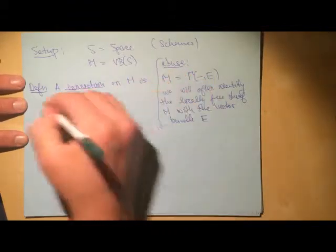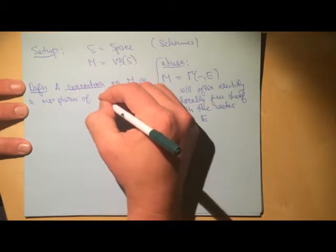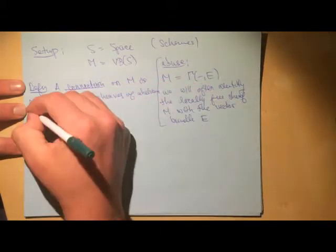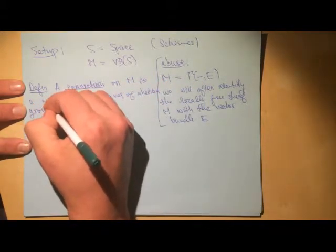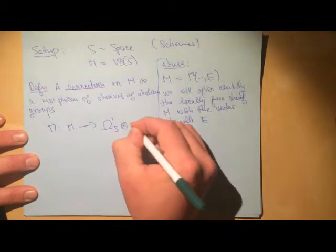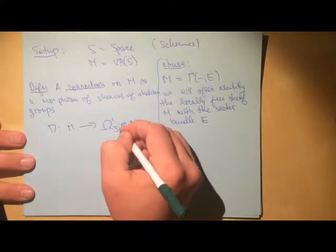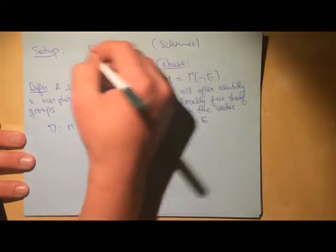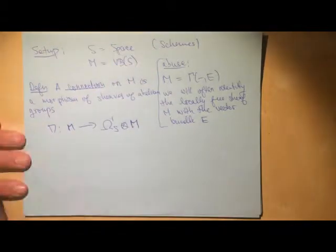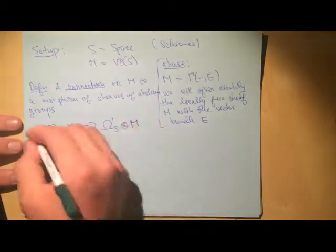A connection on M is a morphism of sheaves of abelian groups from M to Omega^1(S) tensor with M. Sometimes we fix a relative version where the space sits over another space and derivatives with respect to the base are constant, but I won't put that in the notation.